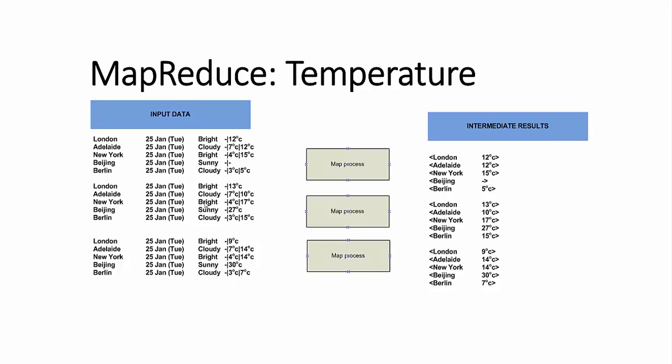In this example, the map process is doing some kind of filtering on the data and maybe some lightweight processing. The intermediate results would consist of key-value pairs of a city followed by high temperature for the day. The map processes may filter out data based on a date range.